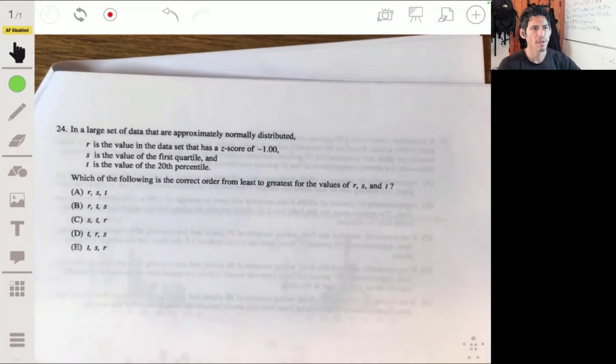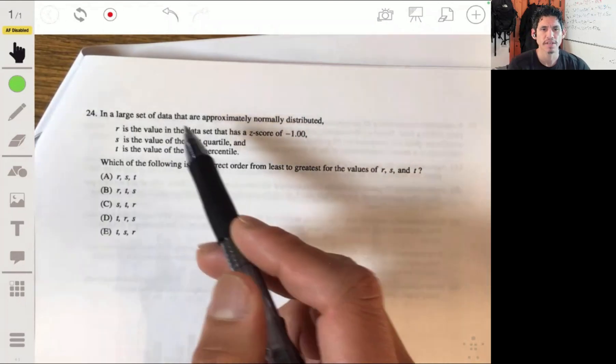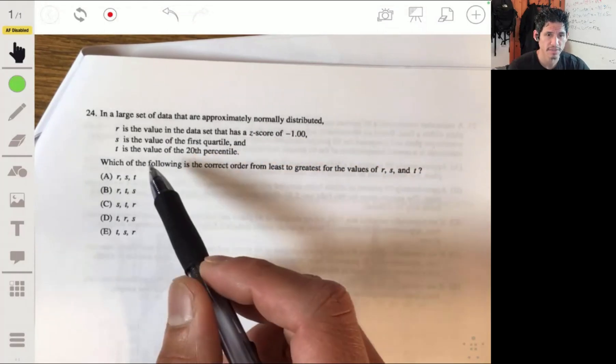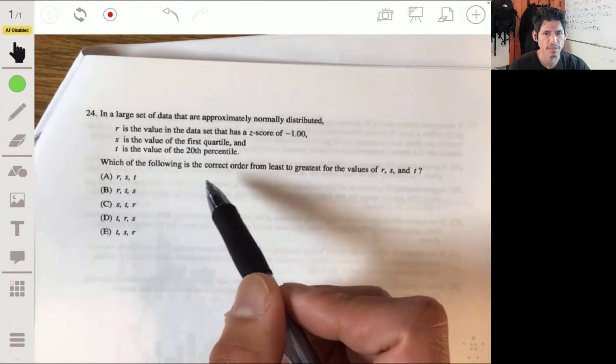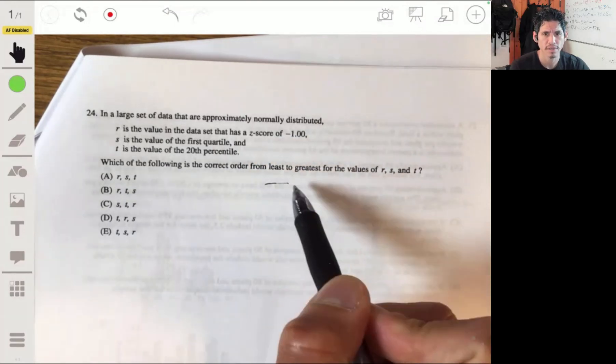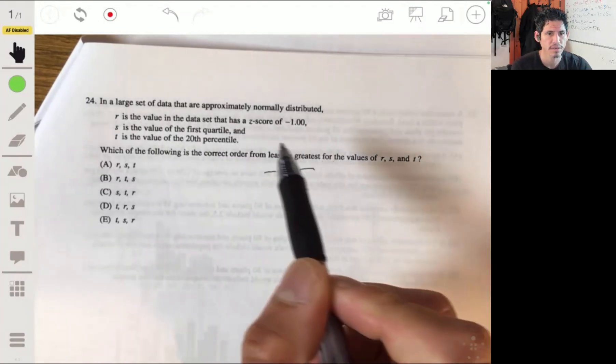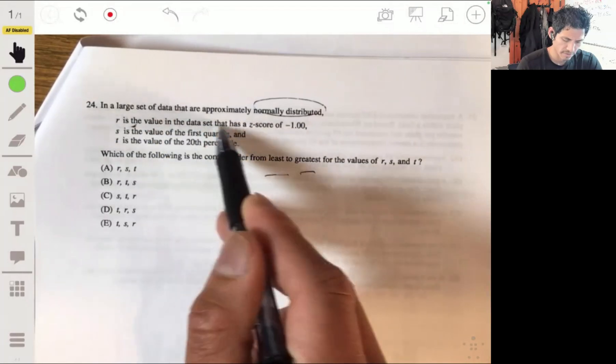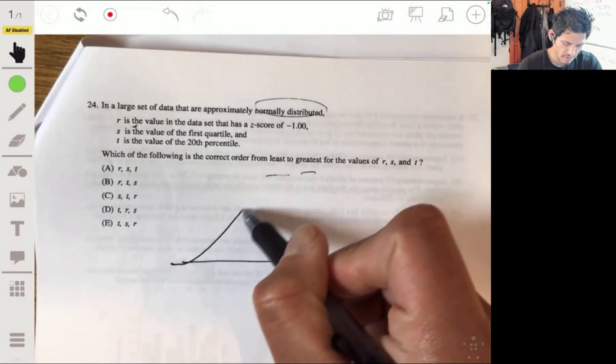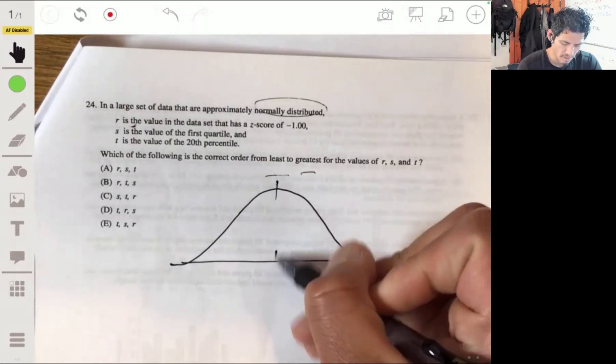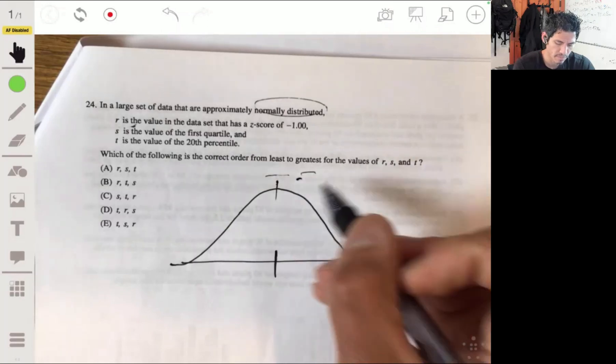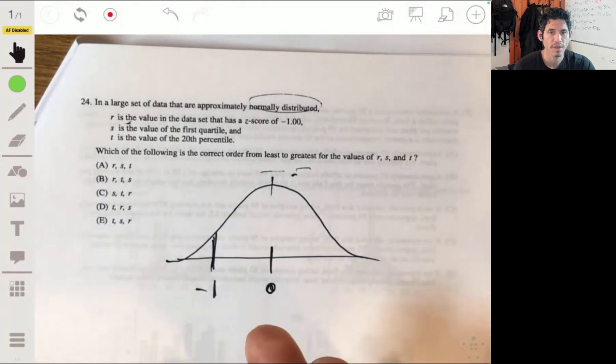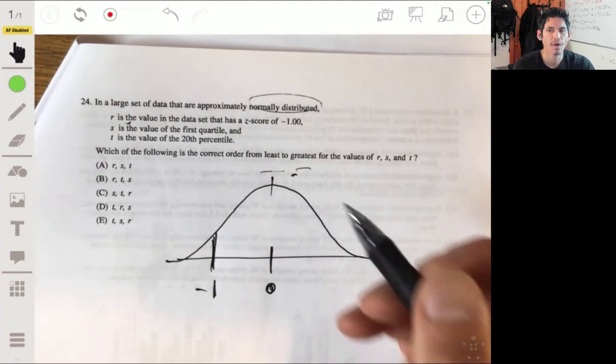Problem 24. In a large set of data that are approximately normally distributed, R is the value in a data set that has a z-score of negative 1. S is the value of the first quartile. And T is the value of the 20th percentile. Which of the following is the correct order, from least to greatest, of the values of R, S, and T? This one's easy. You just got to know what these terms mean. So, normally distributed, R is the value that has a z-score of negative 1.